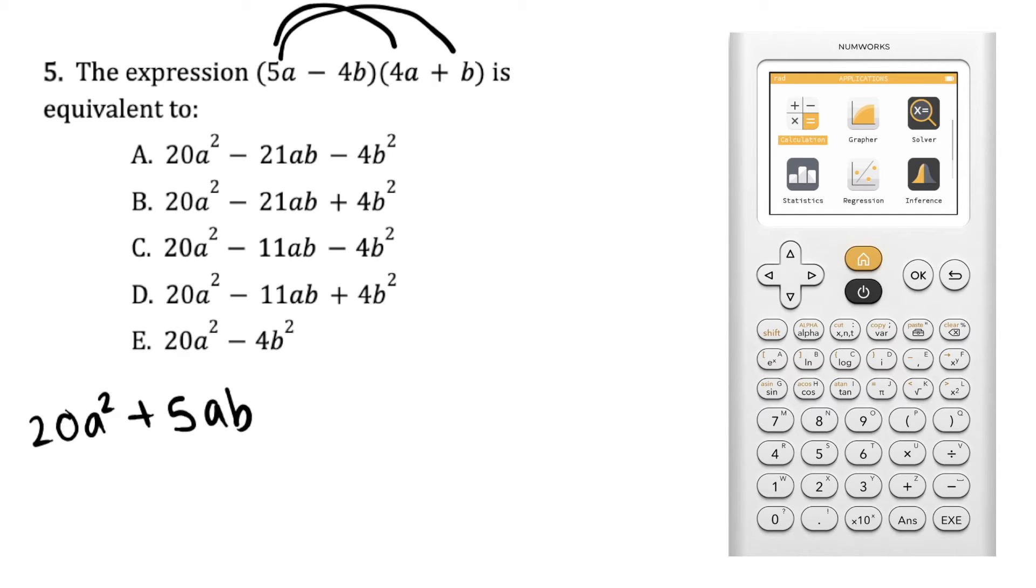negative 4b times 4a, which is negative 16ab, and then we have negative 4b times b, which is negative 4b squared.